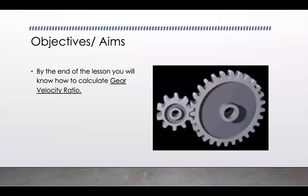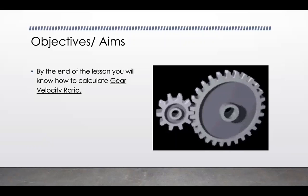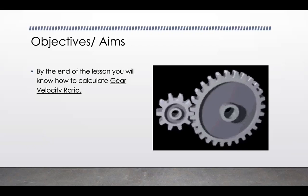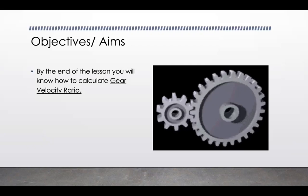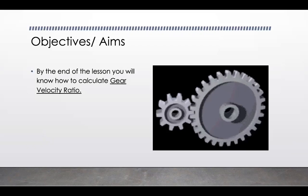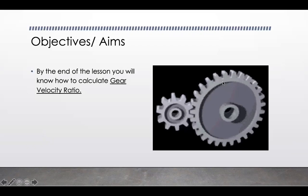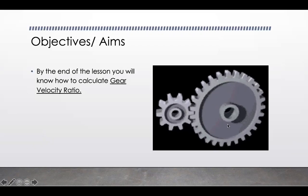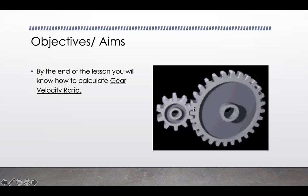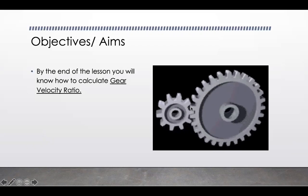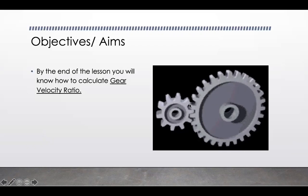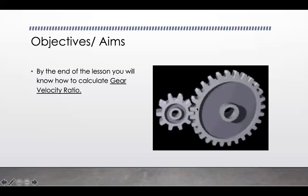By the end of this lesson you'll be able to calculate gear velocity ratio based on examples where you can see the number of teeth for both or multiple gears. On the right we have a normal spur gear — you can see how it rotates and how they all interlink. This is how normal gears work without a chain, perfectly fitting together every single time.